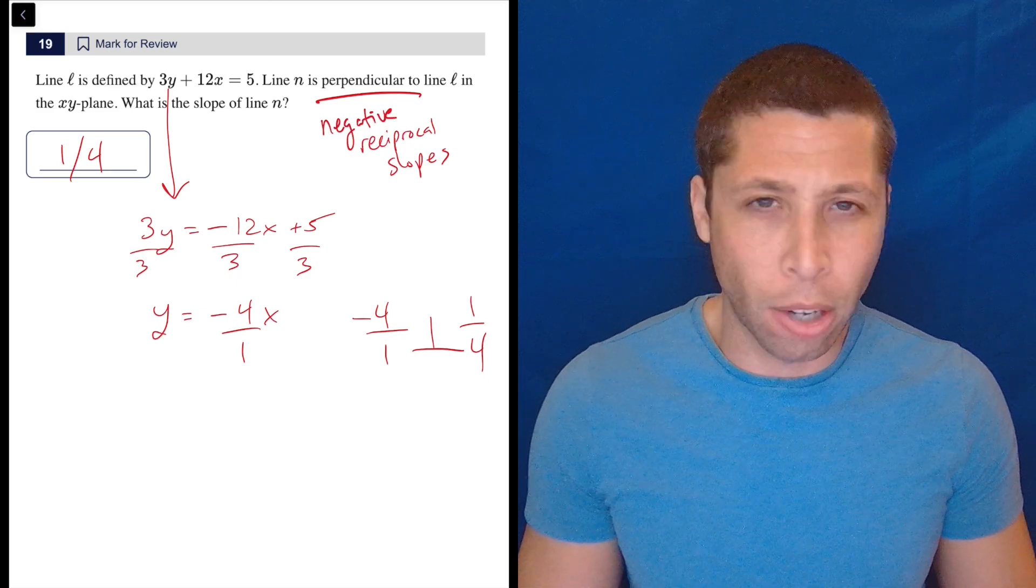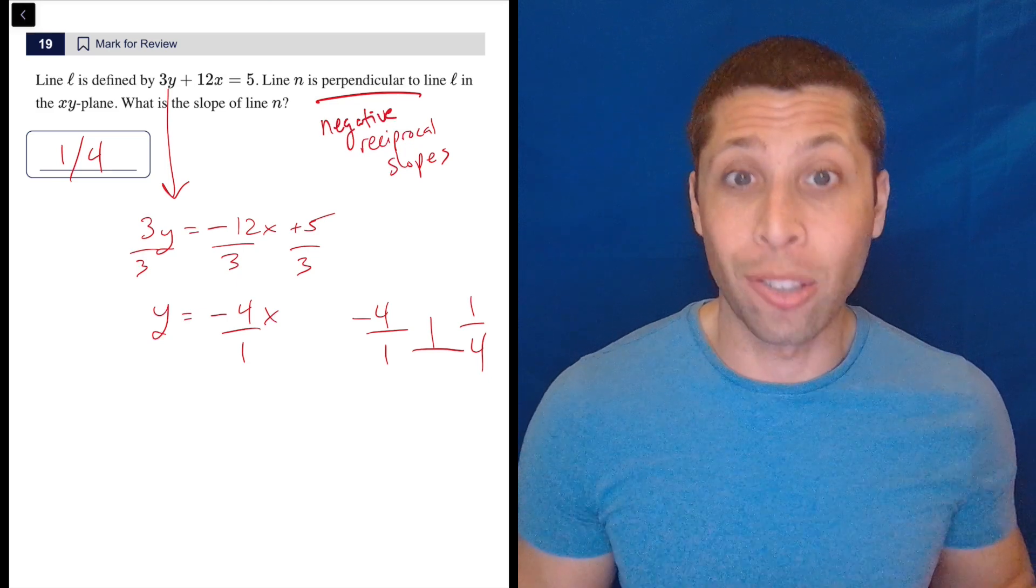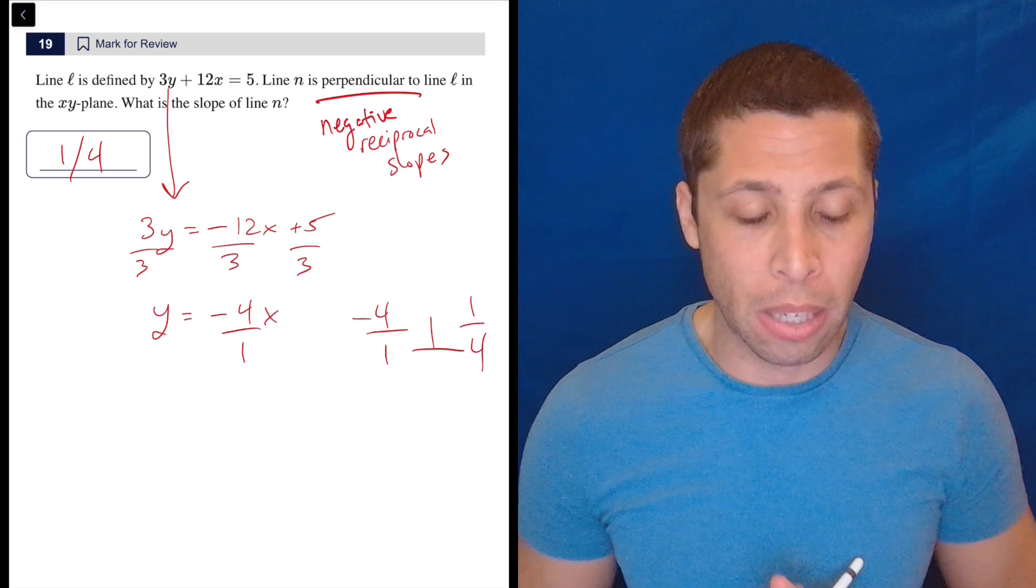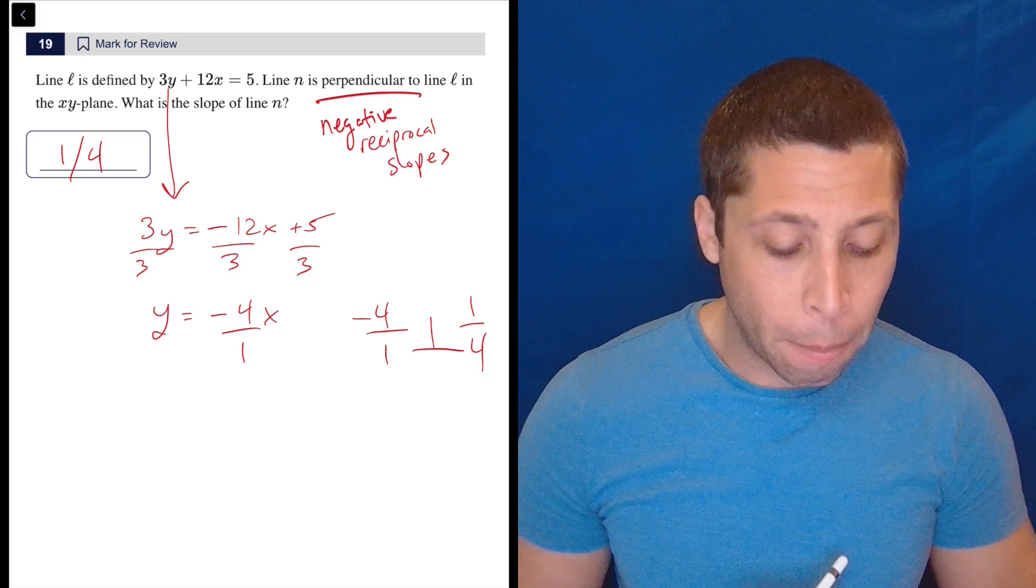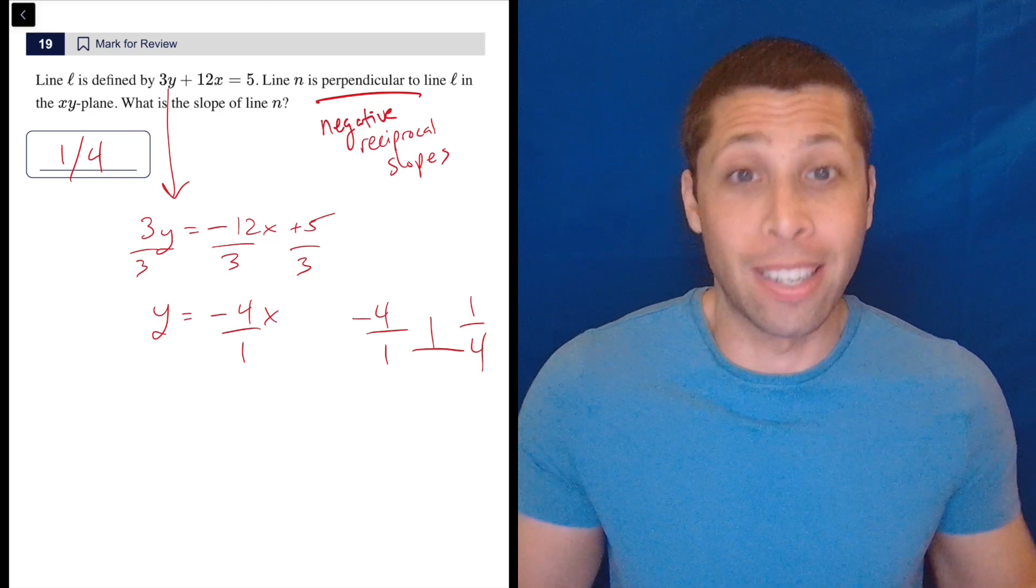I would not try to think about the slope without doing that work because if I lose a negative, I get this wrong. So that kind of stuff really matters. I'm super cautious about it. But really, this is just memorize one single fact about perpendicular lines. And that's it. That's the whole question.